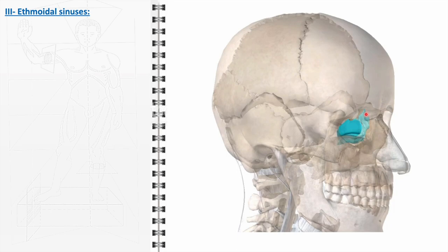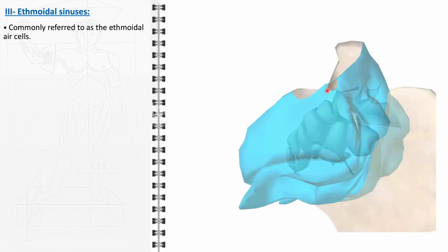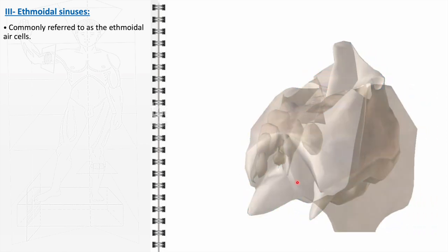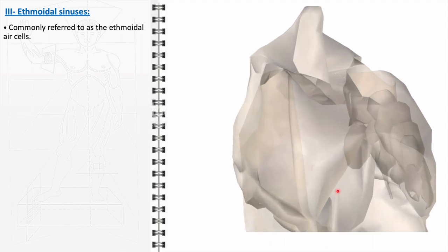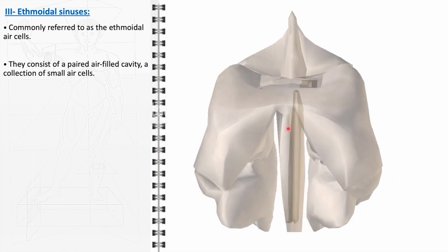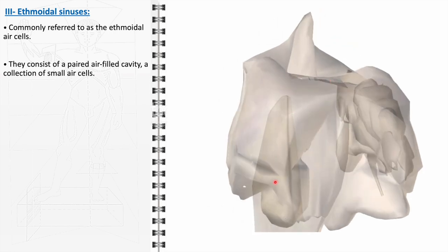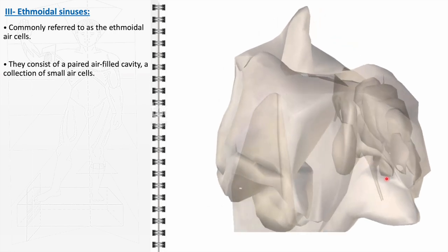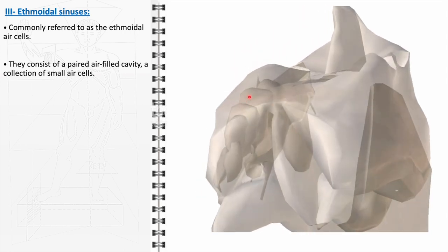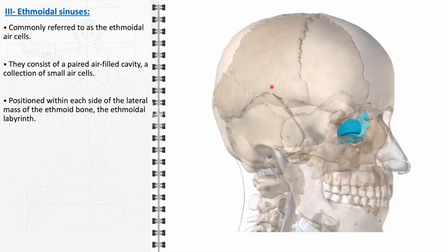The ethmoidal sinuses, often known as the ethmoidal air cells, represent a unique and complex component of the paranasal sinus system. Unlike the larger singular cavities of the other sinuses, the ethmoidal sinuses comprise a collection of small, interconnected air cells, which together form a paired air-filled cavity. This distinctive structure contributes significantly to the intricate anatomy of the ethmoid bone, also referred to as the ethmoidal labyrinth. These ethmoidal air cells are strategically positioned within each side of the lateral mass of the ethmoid bone, playing a vital role in the protection and functioning of adjacent organs.